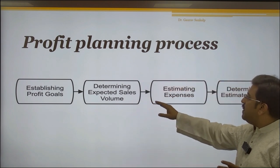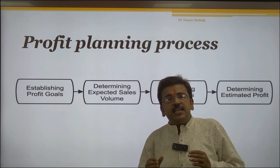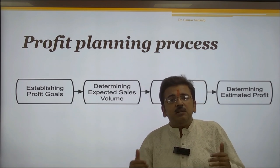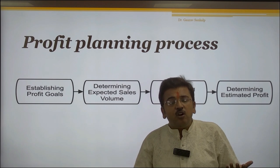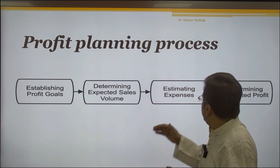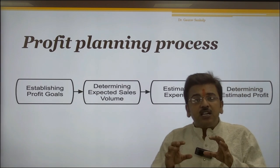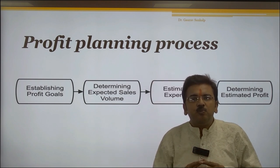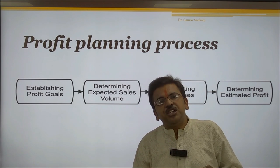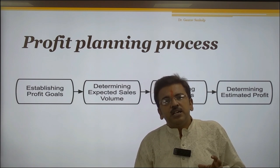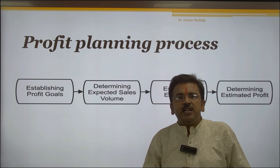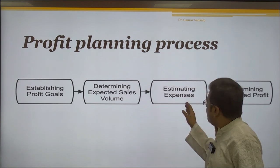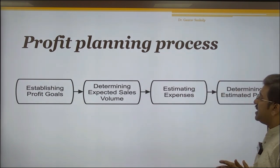The second step is determining expected sales volume — if we are making any product, what is the sales volume required in the market, meaning what is the demand of that specific product. The third step is estimating expenses: what are the costs of raw material, the costs of machineries required to make the final output, the cost of logistics and supply chain, transportation cost, and the different taxes which the company has to pay. Everything should be properly estimated.